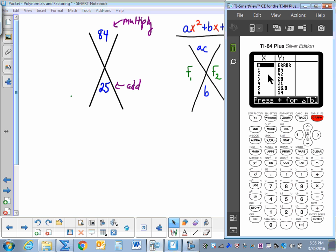As we can see we have the factors of 84: 1 times 84, 2 times 42, 3 times 28. So those are the factors of 84. But we need to know which of these factors add to 25.